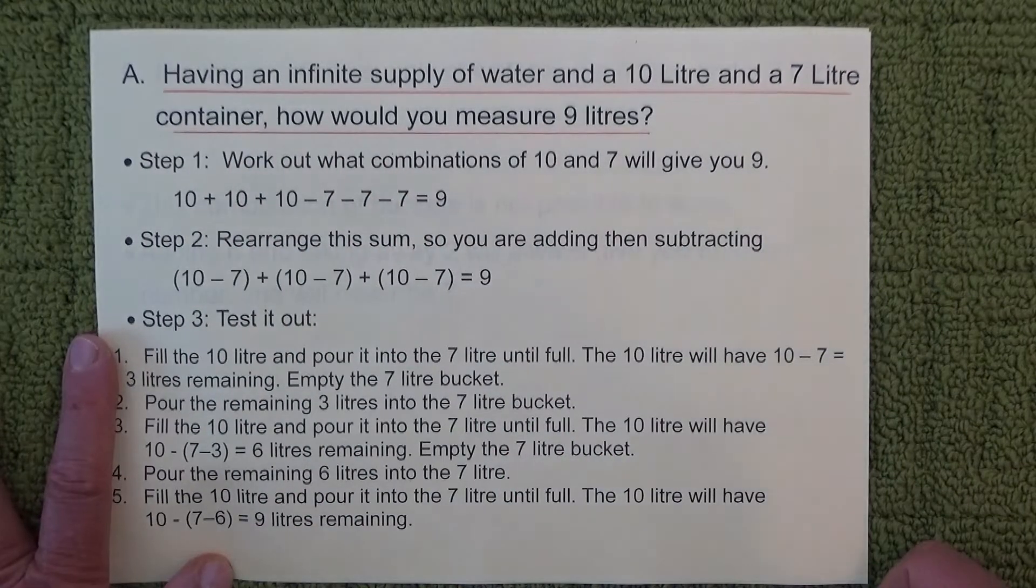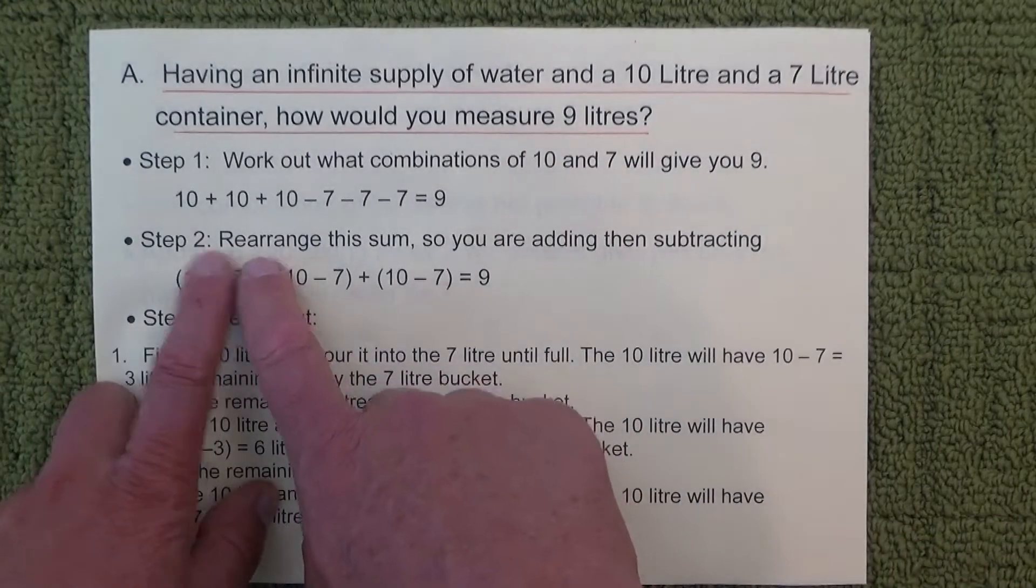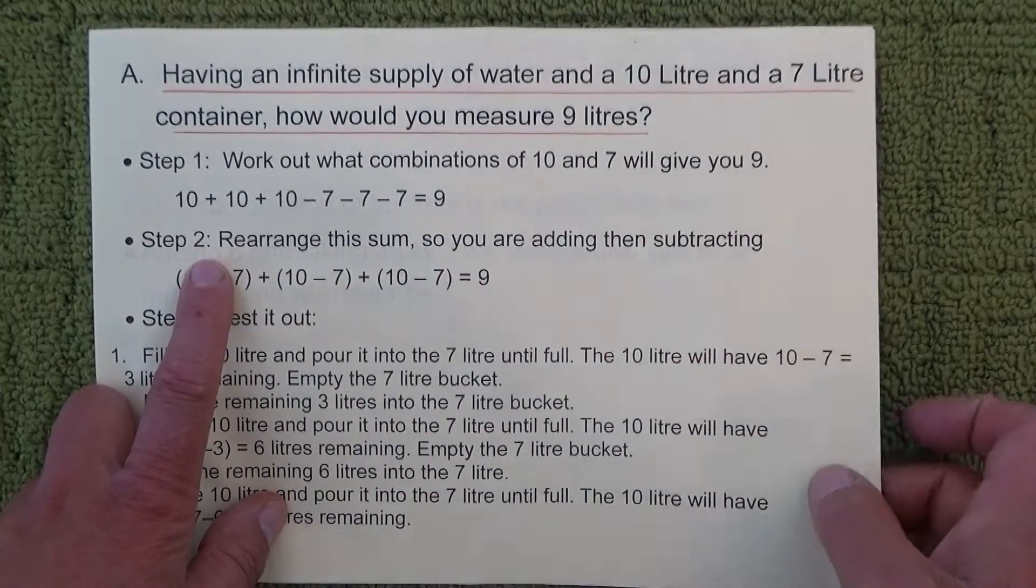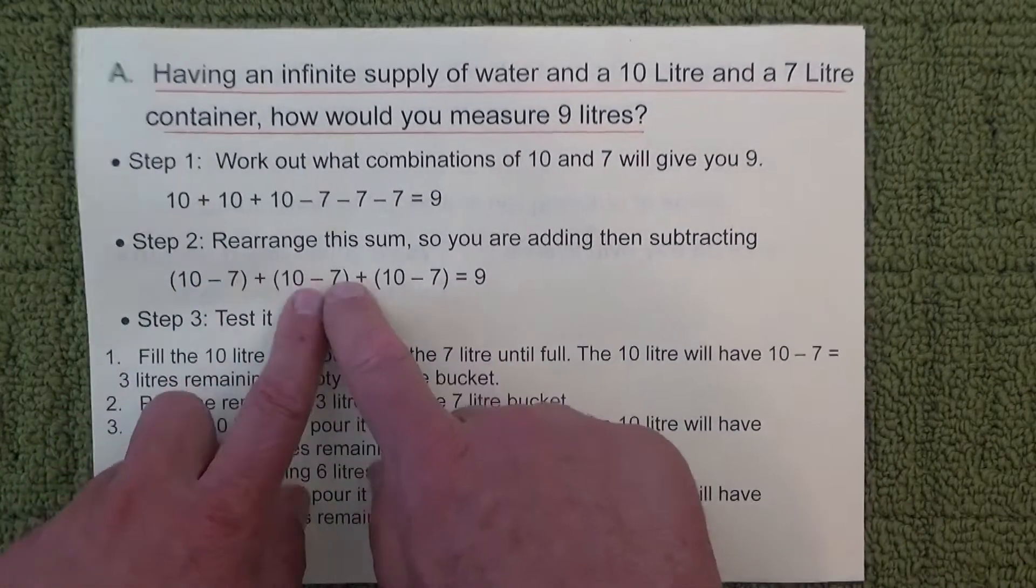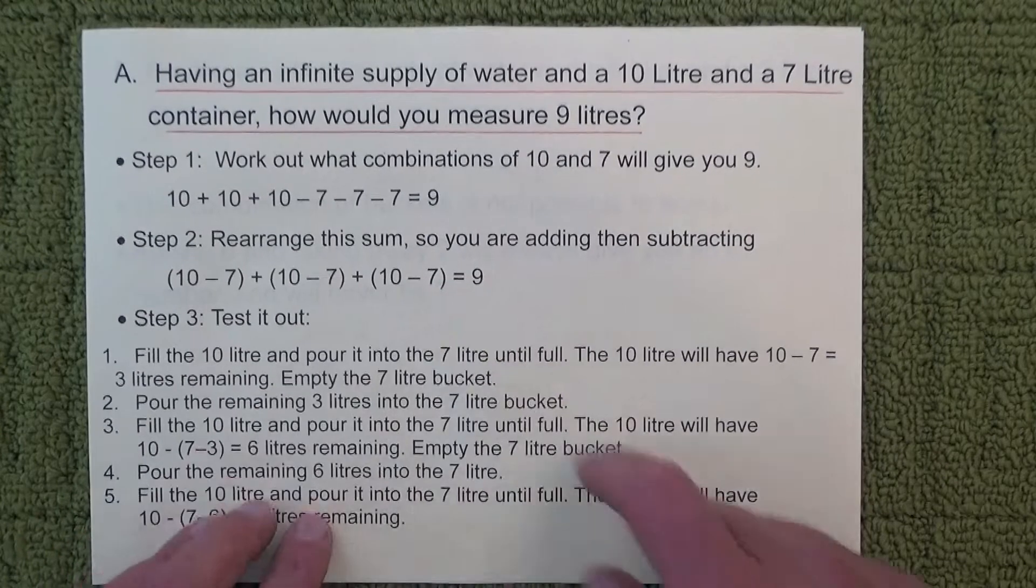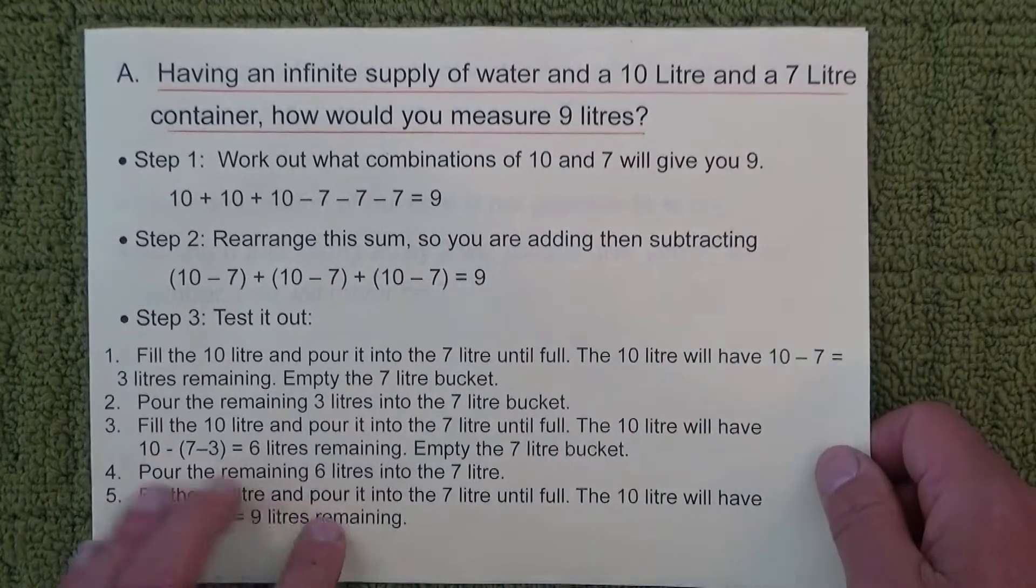And then the next step is to actually rearrange the sum so that you're adding and then subtracting: (10 minus 7) + (10 minus 7) + (10 minus 7), and that also gives that 9 there when you add those three sections together.